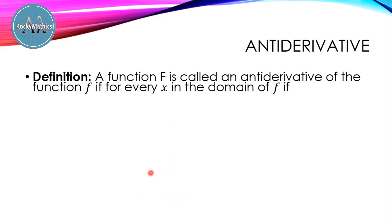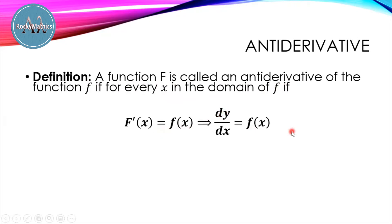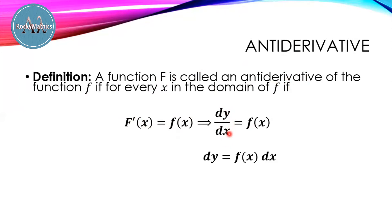By definition, a function F is called an antiderivative of f, if for every x in the domain of f, this equation holds. Meaning to say, we can say that the function F is called an antiderivative of f if the derivative of F, which is F prime of x, is equal to that small f. That small f is actually the derivative. In other words, if we are given the derivative, then we can find the antiderivative. Note also that dy/dx is equal to f of x, so we can also write it in this form.